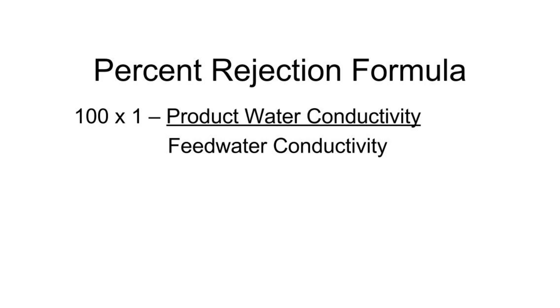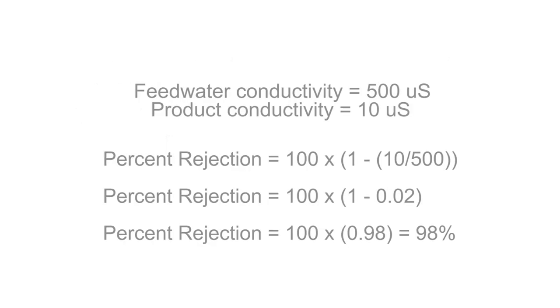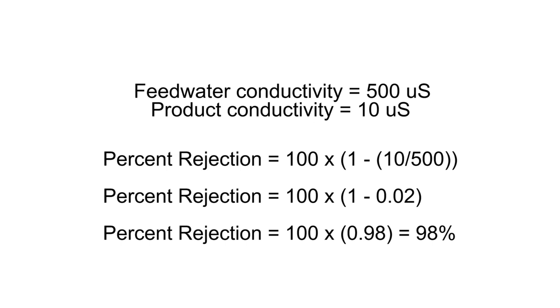If your feed water comes from surface water, such as a river or lake, or from different sources such as two wells, feed water conductivity changes frequently. To account for changes in feed water conductivity, we use a calculation called percent rejection instead of product water conductivity to determine if RO membranes or internal O-rings are damaged. The formula for percent rejection is: percent rejection equals 100 times (1 minus product conductivity divided by feed water conductivity). For example, if feed water conductivity is 500 microsiemens and product conductivity is 10 microsiemens, percent rejection is 98.